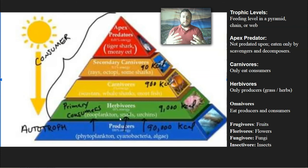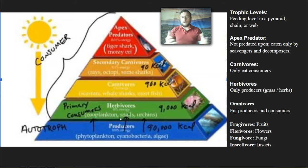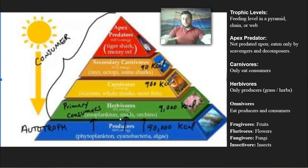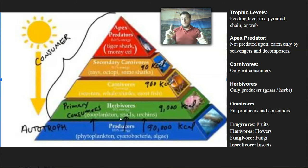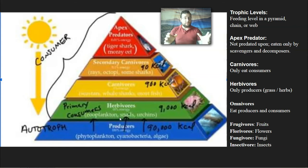A feeding level is also called a trophic level because 'troph' means eat. Whether you're looking at a pyramid, a chain, or a web, each layer is considered a trophic level. The first basic trophic level is where you have all the producers like bacteria, cyanobacteria, phytoplankton, and algae. Cyanobacteria is a special type of photosynthetic bacteria, which is the cousin of the chloroplast that lives inside all of the algae and plants in the ecosystem.